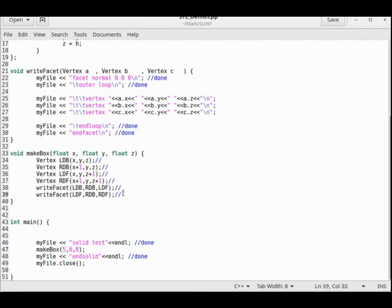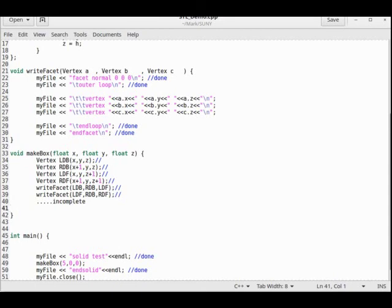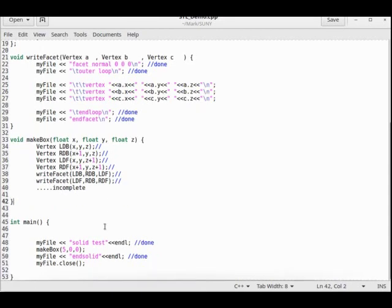Now, of course, remember, my box is incomplete. Yours will have a little bit more stuff there. So let me see if I can make two boxes. Make box 5, 0, and let's put this box at the origin. So I'm now going to be drawing two boxes.